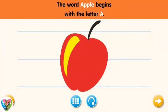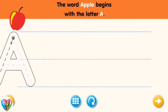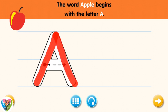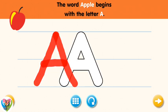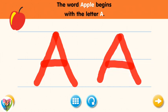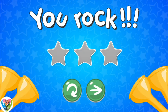The word apple begins with the letter A. Trace the letter A. Connect the dot and the star with a line. Excellent! Now write the letter A yourself. You lost!